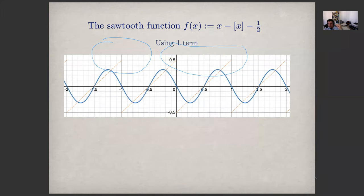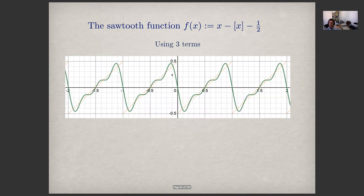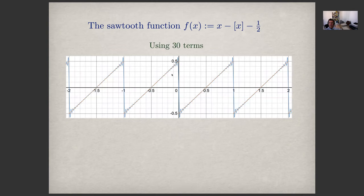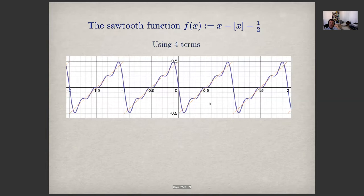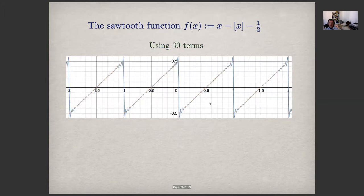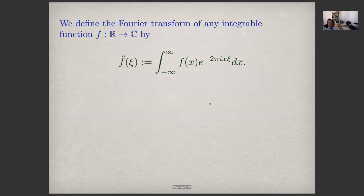We can now graph the approximations. The dotted orange line is the sawtooth function. The blue line is the first-order approximation — the first term of the series. Then two terms (sum of two sine functions), three terms, four terms, thirty terms. With thirty terms we already see an interesting Gibbs phenomenon, where we overshoot the true value of the function near the discontinuities. This is persistent and interesting to observe.